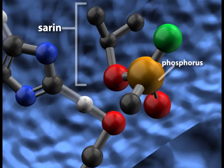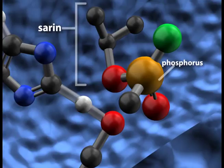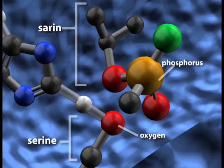The phosphorus atom, seen in orange, is subjected to nucleophilic attack by the oxygen atom in the serine of the catalytic triad.